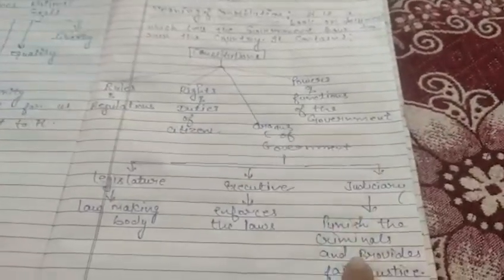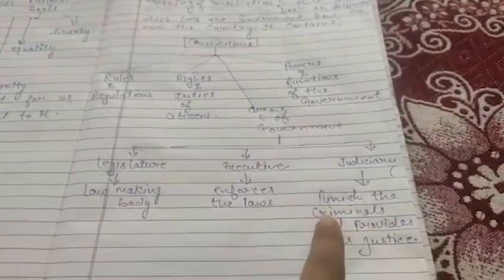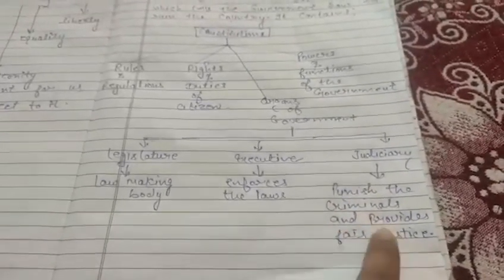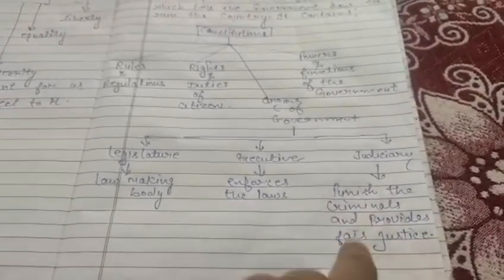Third one is judiciary. Judiciary means it punishes the criminals and provides fair justice to all the people.